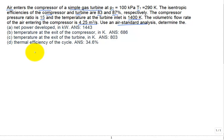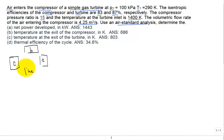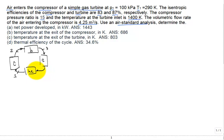First, make a sketch of the components. We have a compressor, then a burner, then a turbine, and to complete the cycle, a heat exchanger which rejects heat to the atmosphere. It goes in a cycle where state one is the inlet to the compressor, state two is the outlet of the compressor and inlet of the burner, state three is the outlet of the burner and inlet of the turbine, and state four is the outlet of the turbine and inlet to the heat exchanger.